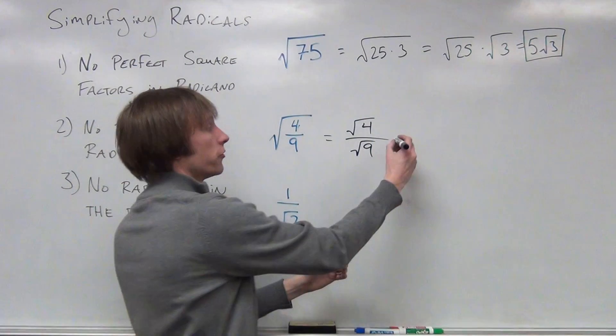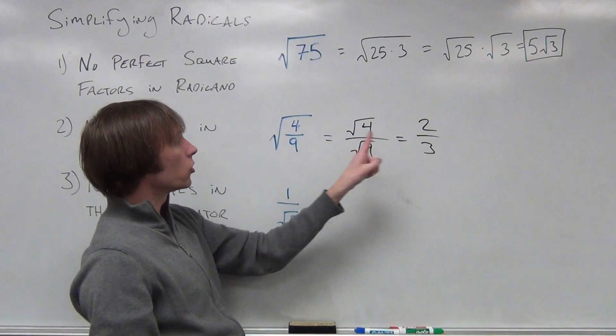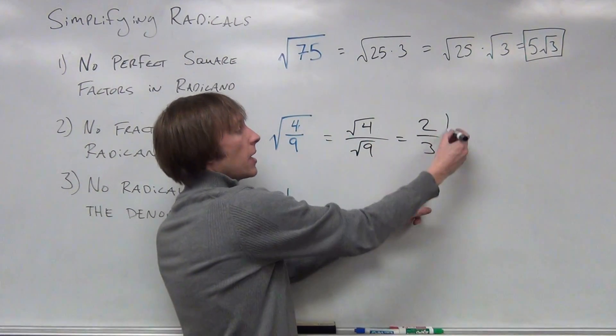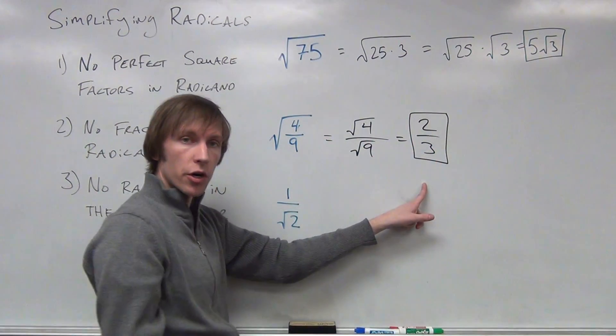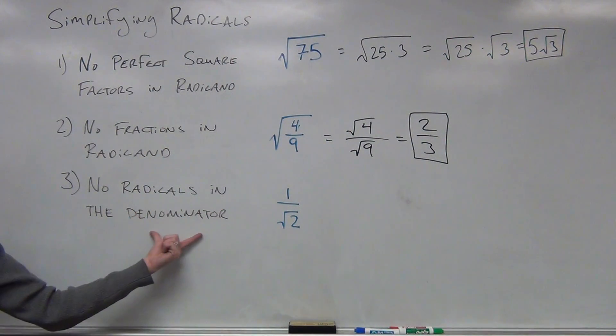We know the square root of 4, that's 2. We know the square root of 9, that's 3. So our radical 4 ninths is the same as 2 thirds. The last example here, no radicals in the denominator.